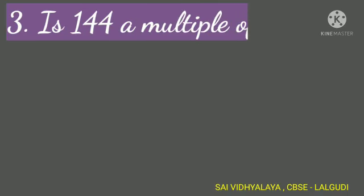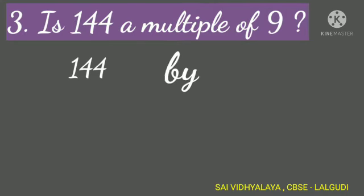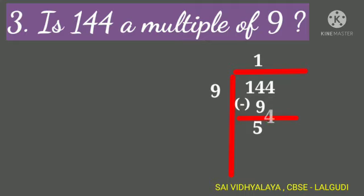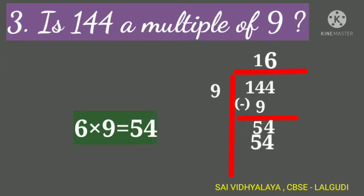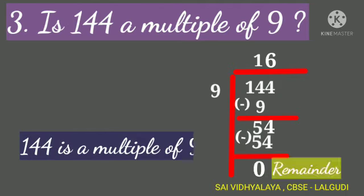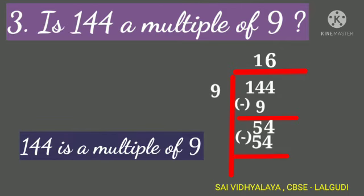Next, is 144 a multiple of 9? Let's find. To find this, we have to divide 144 by number 9. Write 144 in the dividend place and 9 in the divisor place. 1 nine is 9. 14 minus 9 is 5. Bring down the 4. Now we get 54. 6 nines are 54. Remainder 0. If we get remainder as 0, then the number is a multiple of number 9.